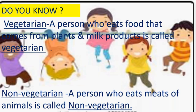Children, do you know the meaning of vegetarian and non-vegetarian? Vegetarian means a person who eats food that comes from plants and milk products — that is called vegetarian. And non-vegetarian means a person who eats meat of animals.